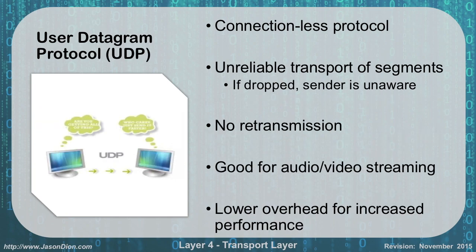User Datagram Protocol, on the other hand, doesn't use a three-way handshake at all. It is a connectionless protocol. It's unreliable for transport of segments, and if dropped, the sender becomes unaware. There's no retransmission, but it is much faster because there's less overhead, giving you increased performance. This is really good for audio and video streaming because of the reduced overhead. As you can see in the image, one guy is sending to the other and goes 'Are you getting this?' and the other goes 'Who cares? Just send it faster.' All we care about with UDP is speed. We don't care about reliability.